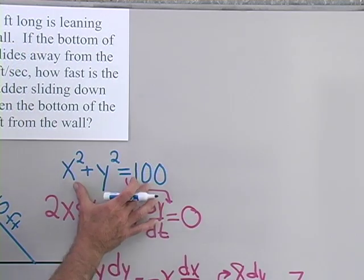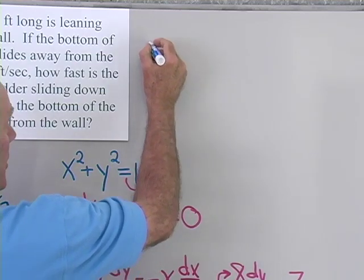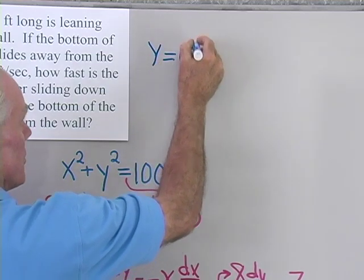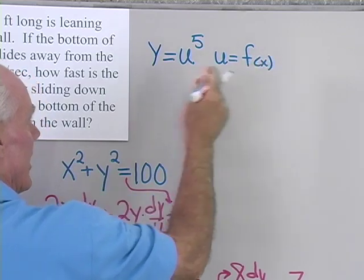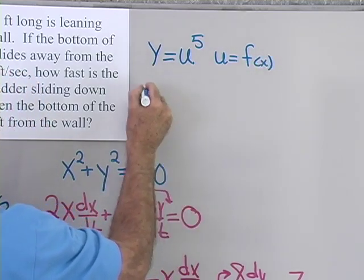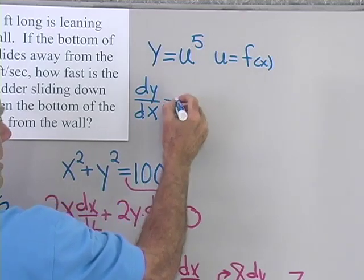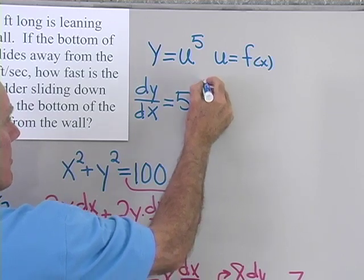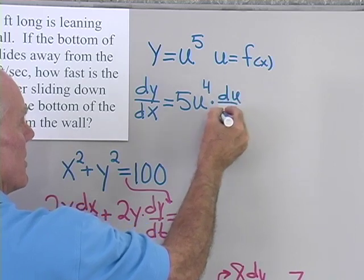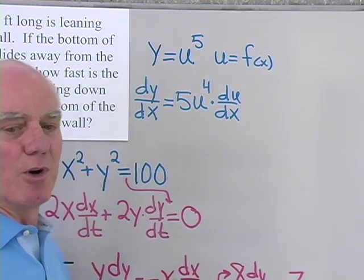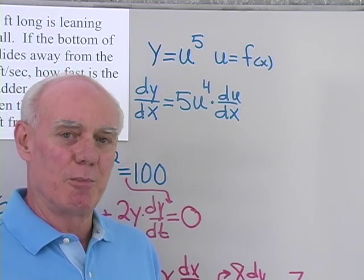Before we leave this problem, I want to go over the implicit differentiation one more time. Suppose that y is equal to u to the fifth power, where u itself is a function of x. If I differentiate y with respect to x using the chain rule, dy/dx is going to be: the exponent comes out in front — 5 — same base, power 1 less, and then I differentiate the base — du/dx. That's the chain rule, and we always have to use it when differentiating like this. Sometimes you think you're not using the chain rule, but you really are.